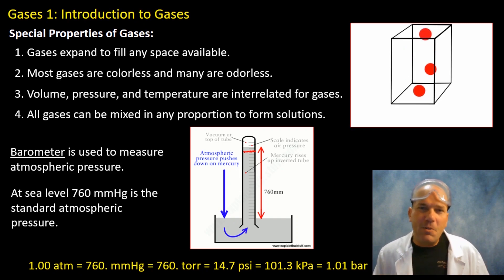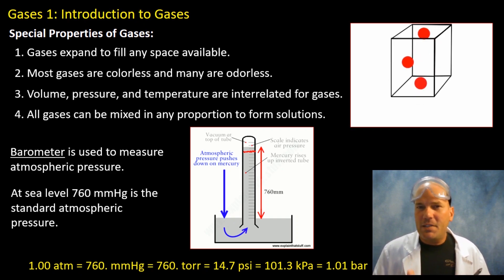760 millimeters of mercury is also equal to 760 torr, which is equal to 14.7 psi or pounds per square inch,